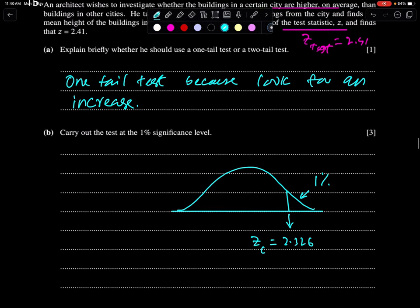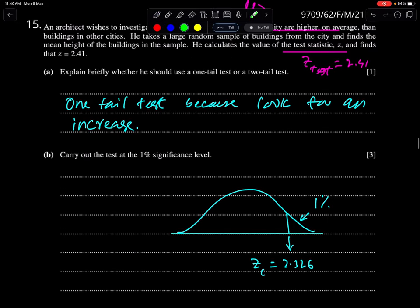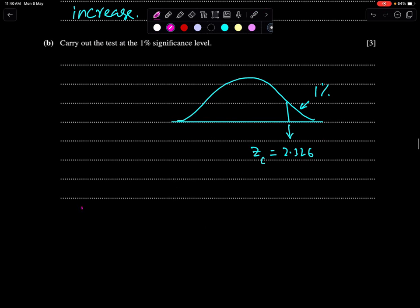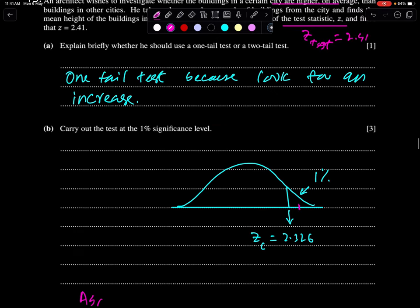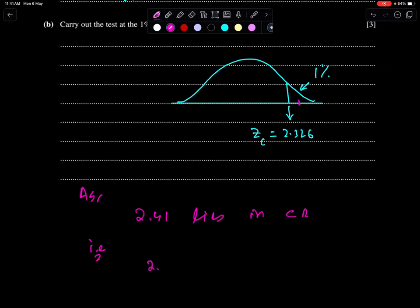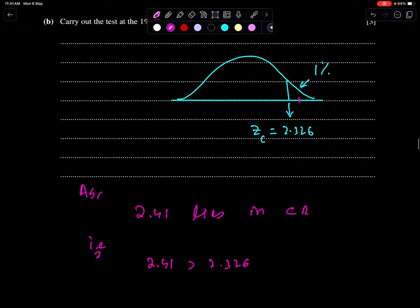You need to compare these two values. You need to write as 2.41 lies in critical region. See, 2.41 is here because it is greater than 2.326. That is, 2.41 is greater than 2.326. Here we reject H0. If the test value lies here, always reject H0. If the test value lies here, then accept H0.